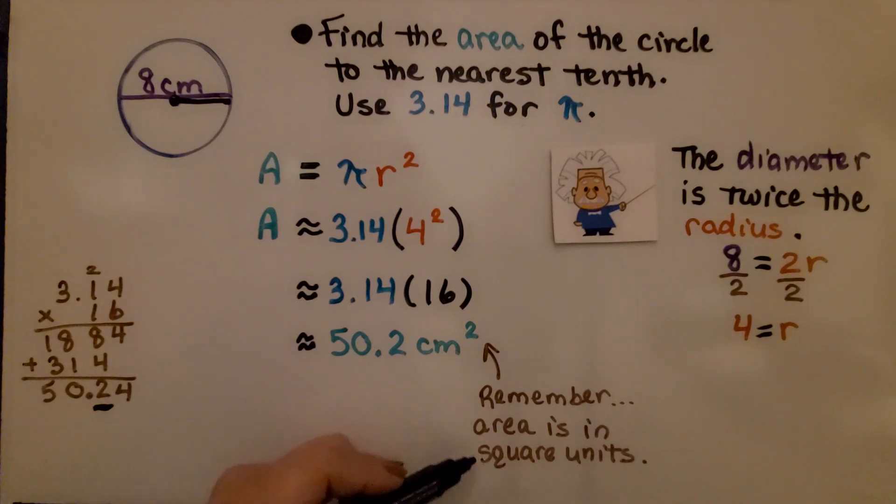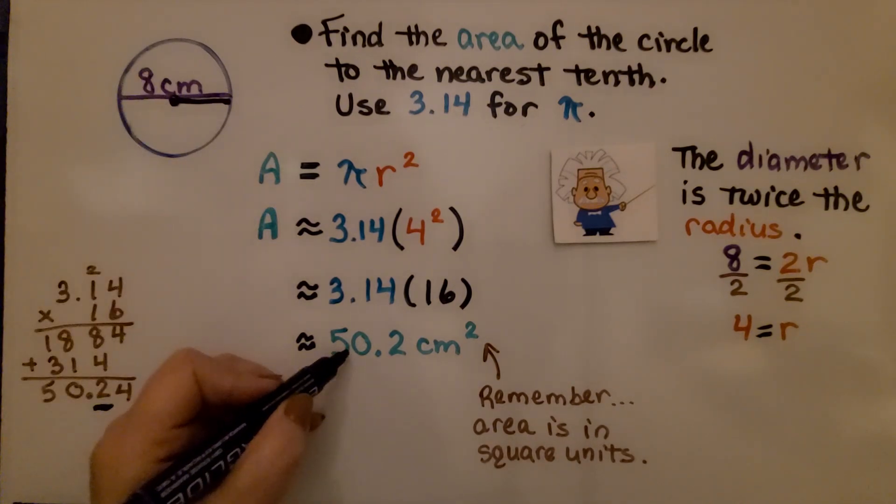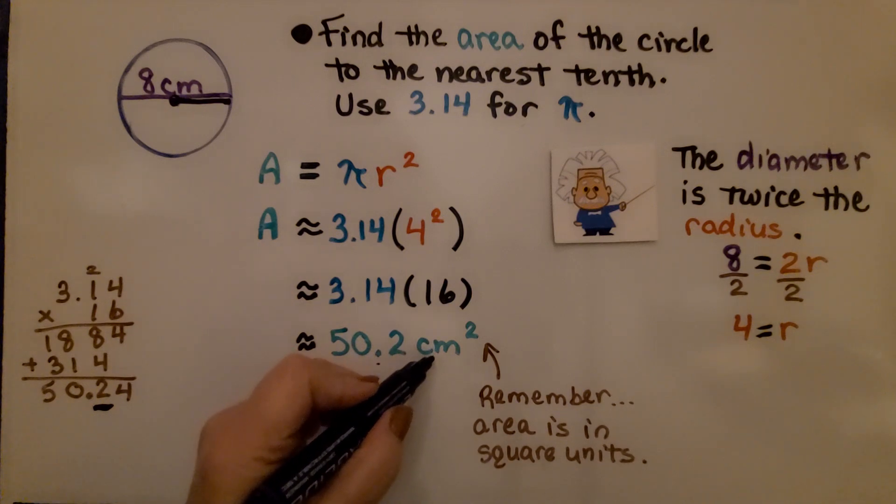And remember, area is in square units. This is in centimeters. So we have 50 and two tenths centimeters square.